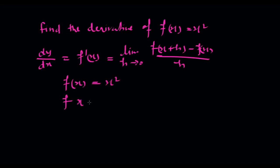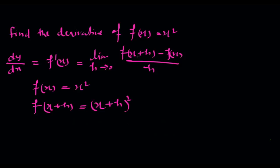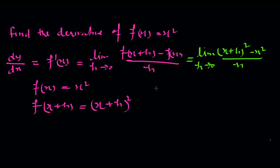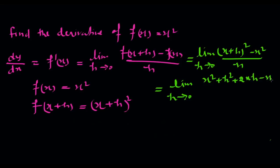We have f(x) equal to x squared. If we increase x by h then we have to put (x plus h) whole squared. Putting these values in the formula: limit h tends to 0 of (x plus h) whole squared minus x squared upon h.